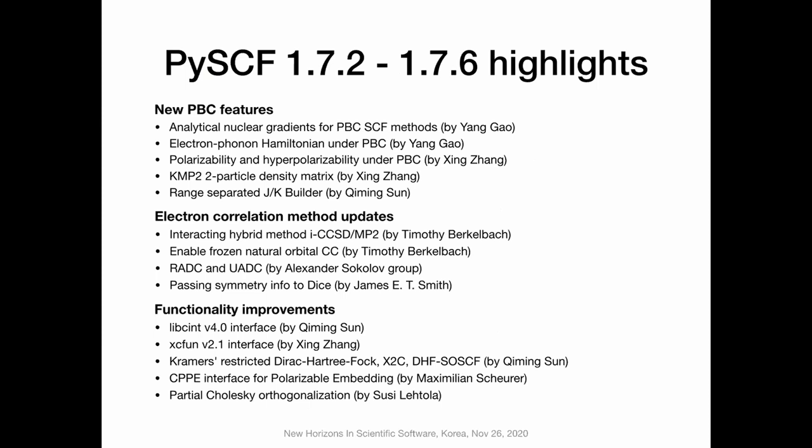This year we're not silent. After the paper was published, we actually added many features. Most of the contributions we made to this project are PBC features, including property calculations like nuclear gradients, polarizabilities for PBC systems, electron-phonon Hamiltonian on PBC, and some correlation calculations for PBC. Recently I added a range-separated JK build, which I will quickly address in a few minutes. We also added some electron correlation methods this year.